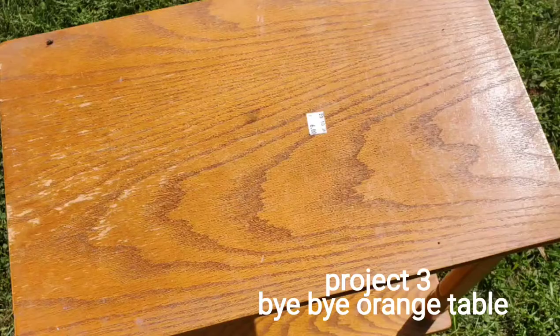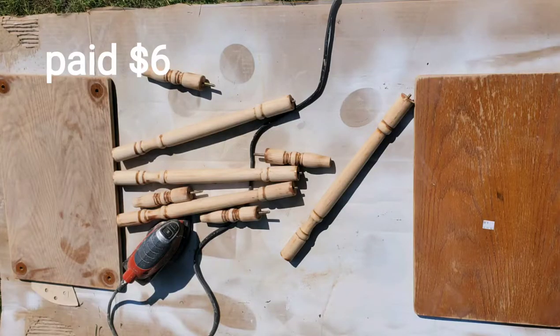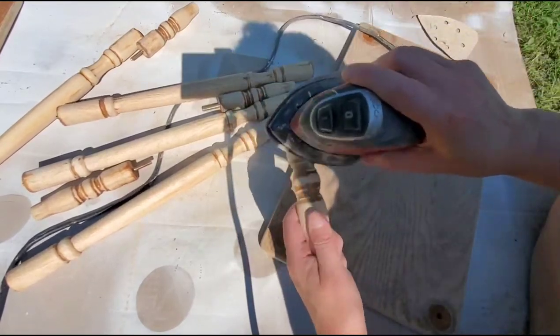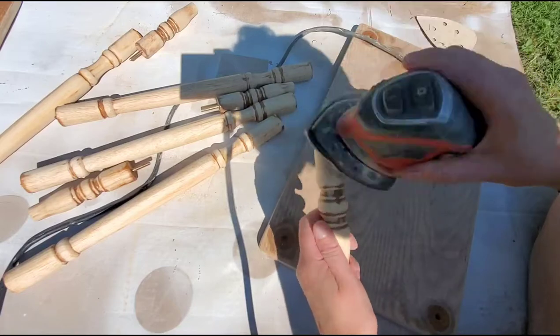And our third and final project is this orange table. For some reason, I can find orange tables and they follow me home. But I was thrilled because it actually all came apart, which makes sanding so much easier. It had quite a wobble to it.